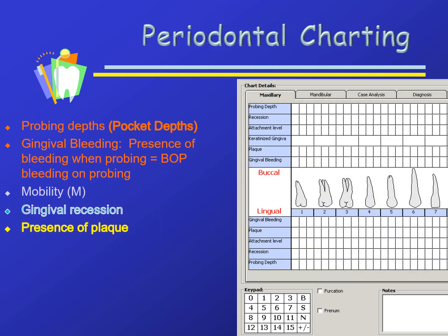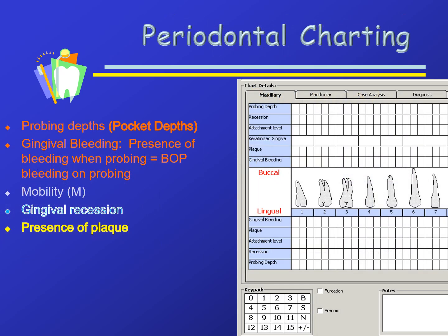In periodontal charting, we have to alter the sequence because we record information for the facial and for the lingual of each tooth. We record probing depths, gingival bleeding, mobility, recession, and whether or not plaque is present. For pocket depths, gingival recession, and presence of plaque, we assess both facial and lingual.